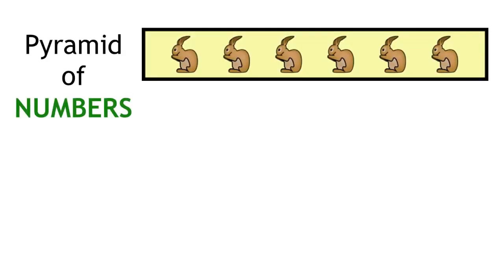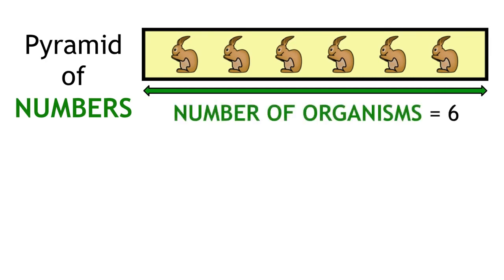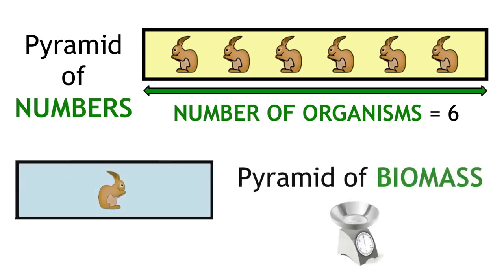For an ecological pyramid of numbers, the width of the bar shows the number of organisms at that step in the food chain. The unit for this is number of organisms. In the pyramid of biomass, it shows the biomass of organisms, and the common unit for this is grams per meter squared.